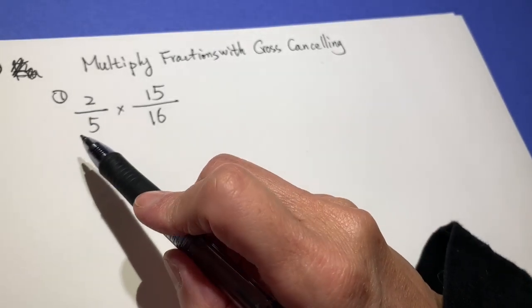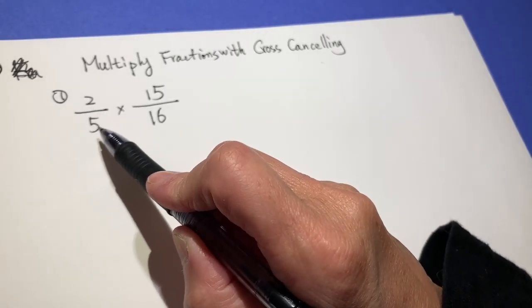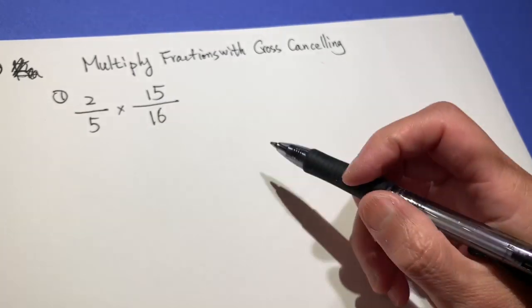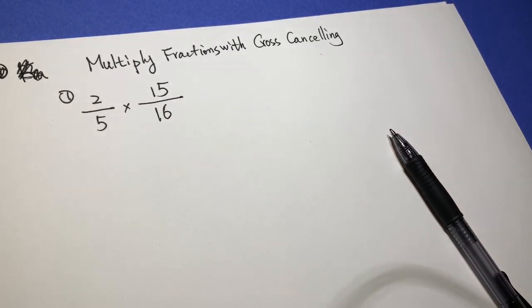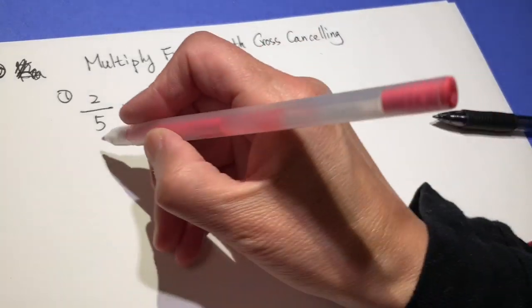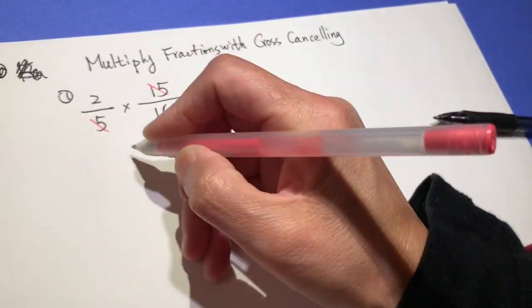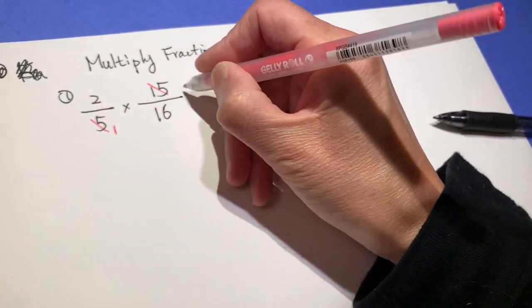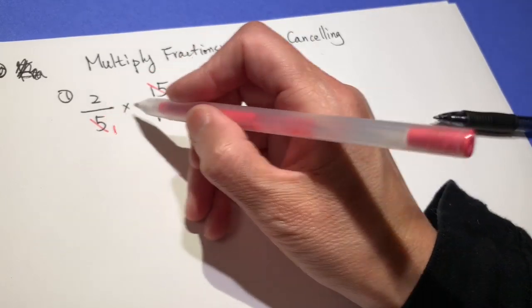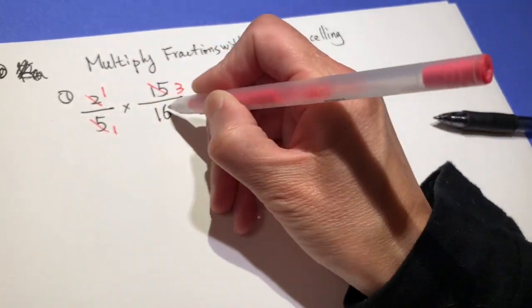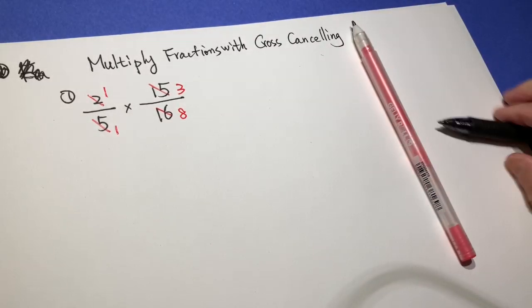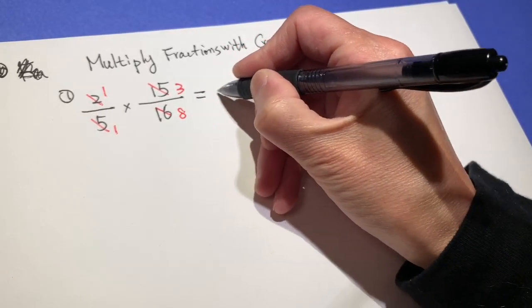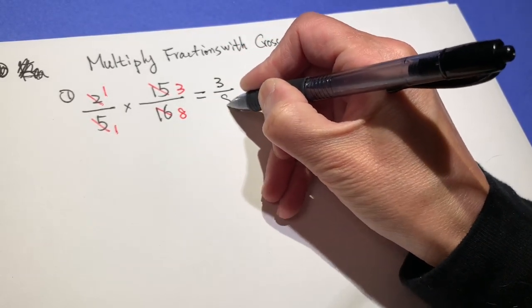Here is the problem: 2 over 5 times 15 over 16. So we can see there are numbers we can cross-cancel. Divided by 5: 1, 3. Divided by 2: 1, 8. So the result is 3 over 8.